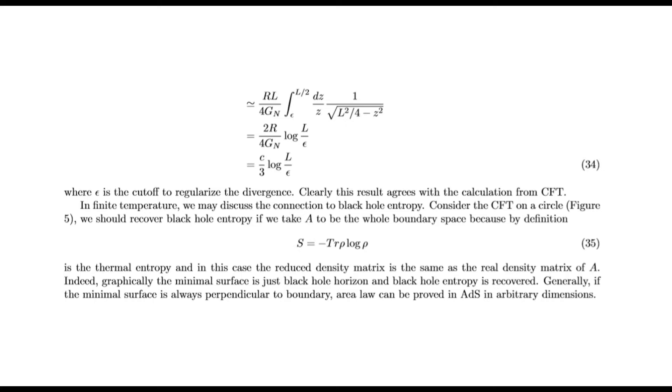At finite temperature, we may discuss the connection to black hole entropy. Consider the CFT on a circle. We should recover black hole entropy as we take A to be the whole boundary space. By definition, S_A = S_thermal, and in this case, the reduced density matrix is the same as the thermal density matrix. Indeed, graphically, the minimal surface is just the black hole horizon, and black hole entropy is recovered.